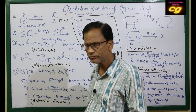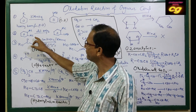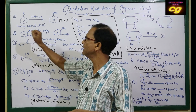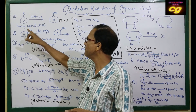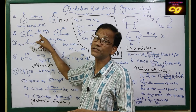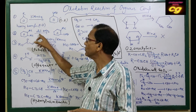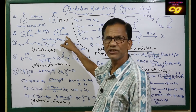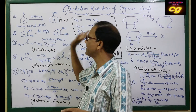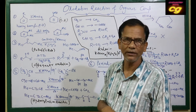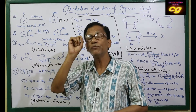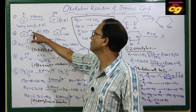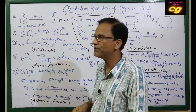Another important oxidation uses dilute nitric acid. When dimethylbenzene is treated with dilute nitric acid, one methyl group is selectively oxidized to a carboxyl group (carboxylic acid) while the other methyl group remains unchanged. You must remember this selective oxidation of dimethylbenzene — only one methyl group is oxidized to the carboxyl group.